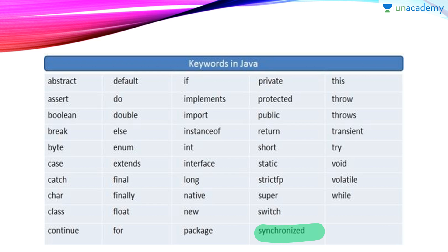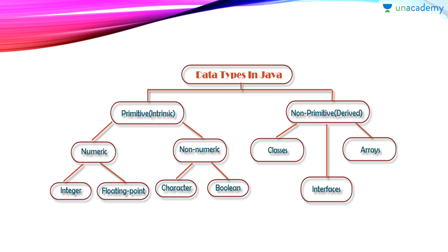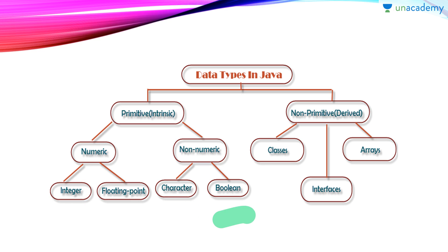These are all new keywords used in Java. Some keywords I have not covered here because they need to be covered with their specific topics. Now let's move to data types in Java. There are two data types: primitive and non-primitive. Primitive data types get memory in the stack, and non-primitive data types get memory in the heap. In primitive, there are numeric and non-numeric types. Under numeric there is integer type and floating point type, and under non-numeric there is character and boolean type.